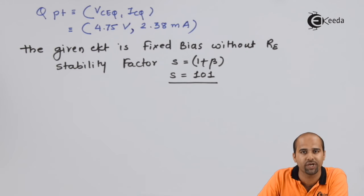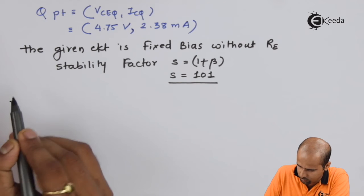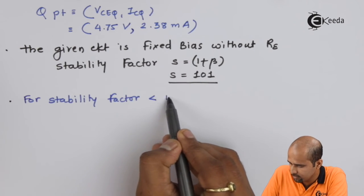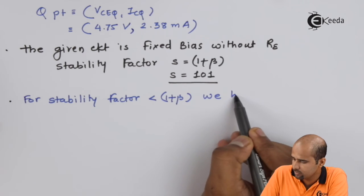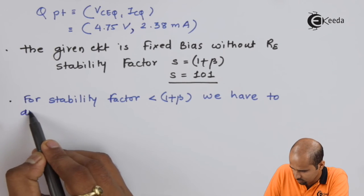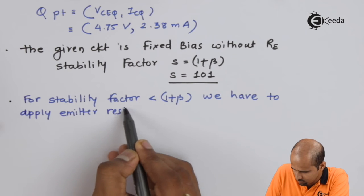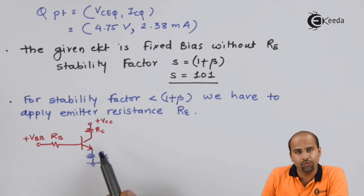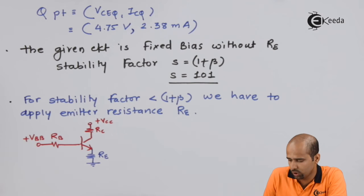Now we move to the third requirement, which is design. We have to calculate the value of RE such that it will meet the specification of the customer requirement, that is stability factor should be 80. We will insert resistance RE to reduce the value of stability factor.